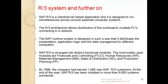The most widely used R/3 modules are Financials and Controlling (FICO), Human Resources (HR), Material Management (MM), Sales and Distribution (SD), and Production Planning (PP). By 1996, the company had earned over 1,000 new SAP R/3 customers, and SAP R/3 had been installed on more than 9,000 systems worldwide — and that was just in 1996.